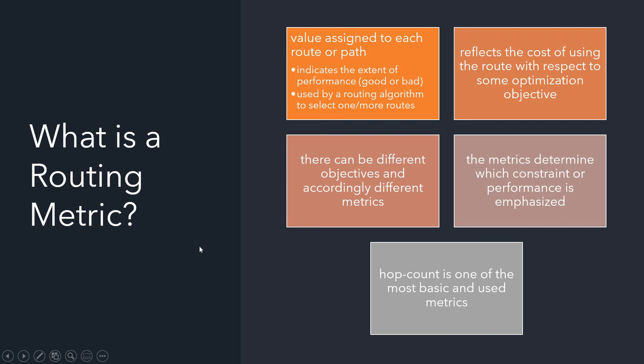Routing metrics are basically values assigned to a route or a path. Once the value for each route or path is known, it can be used to calculate the throughput of the entire network. The value assigned to any route or path indicates the extent of performance — a larger value might indicate good performance and a smaller value bad, or vice versa.